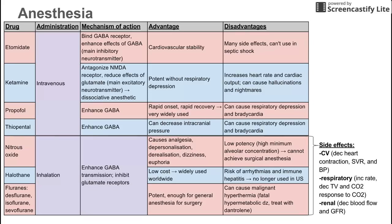The disadvantage of nitrous oxide is that it's not very strong. The minimum alveolar concentration — the amount needed in your lungs to have an effect — is too high, meaning its potency is too low to achieve surgical anesthesia. It's not strong enough to be used during surgery. It's often used in dental procedures like getting teeth pulled, but it cannot completely knock you out — it just makes you euphoric.